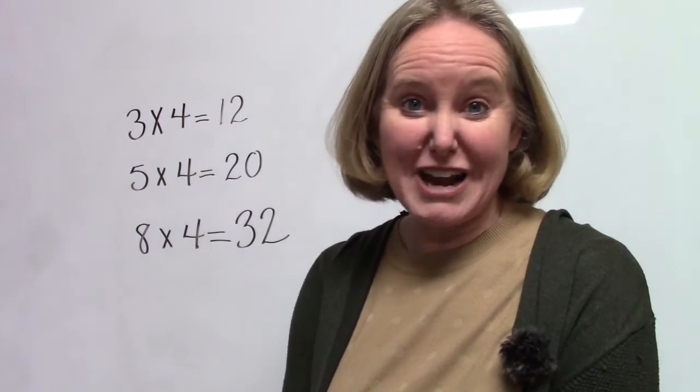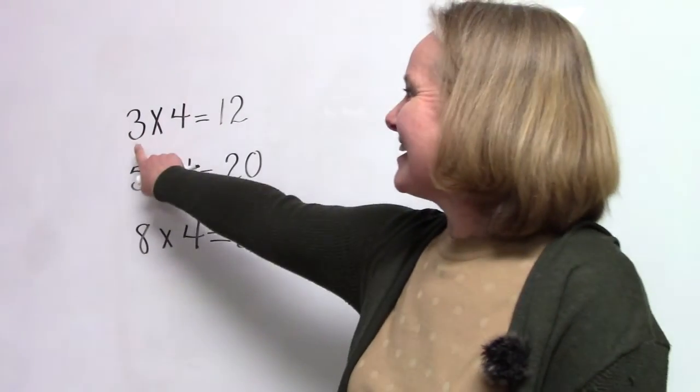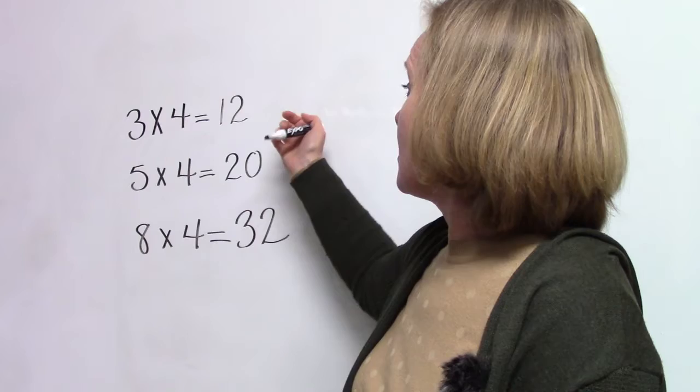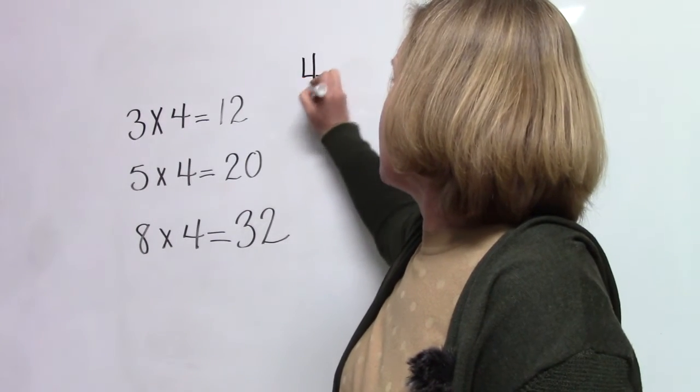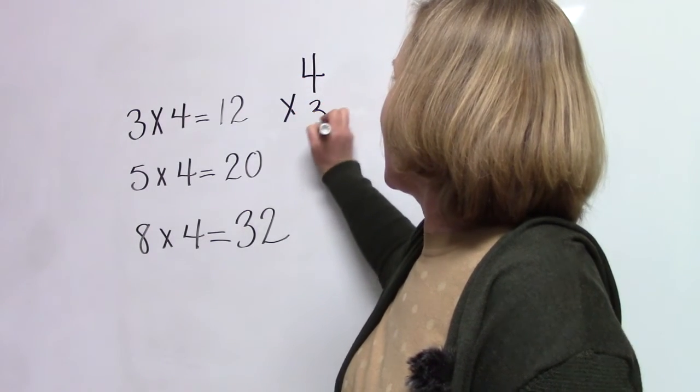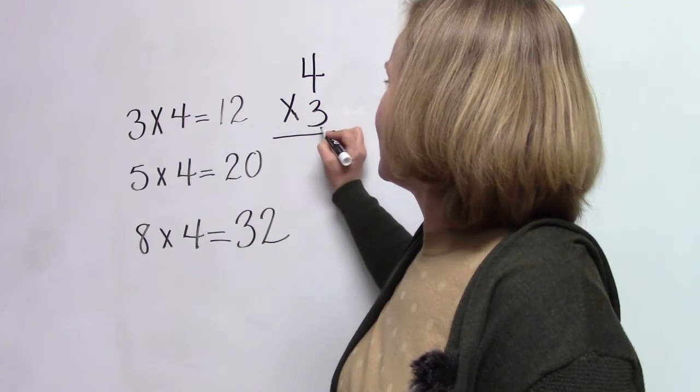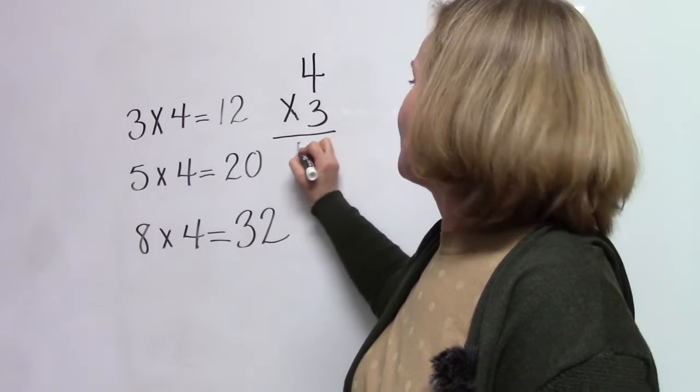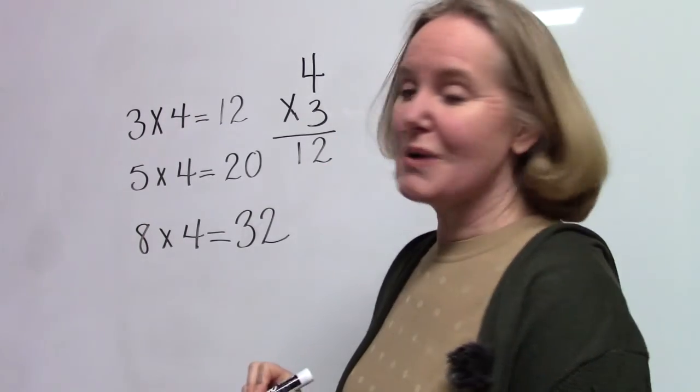There's another way that we could write these questions. Here we have three groups of four equals twelve, but we could also write it this way. We could have three groups of four, and three groups of four is twelve.